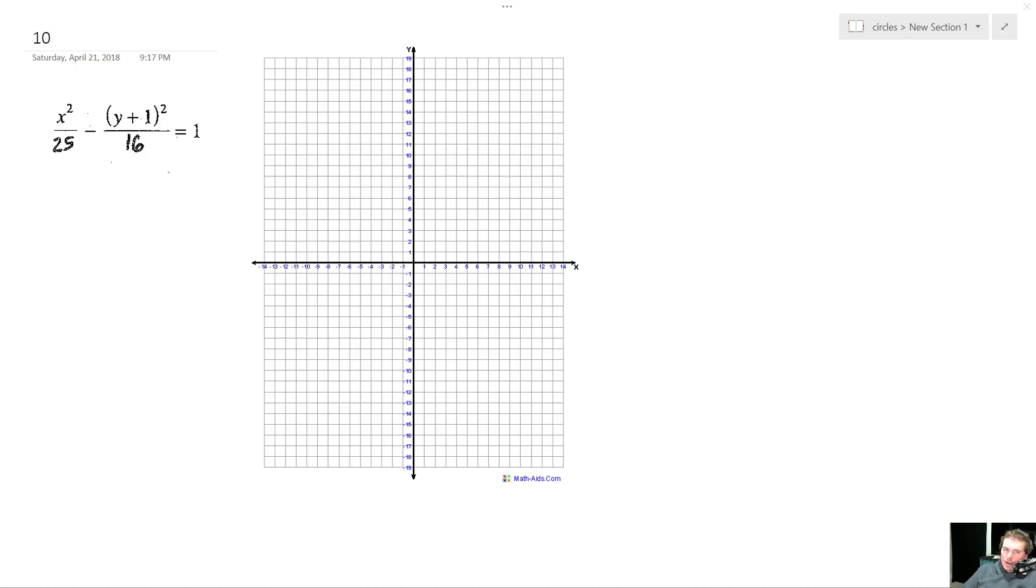Alright, so we want to find the vertices and foci of this problem here. First thing I'm doing is I'm going to find the center. The center, there's no offset for x and then y is just negative 1. So 0 and then negative 1, so this is where we're going to base our center off of.